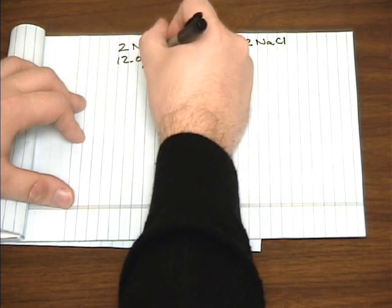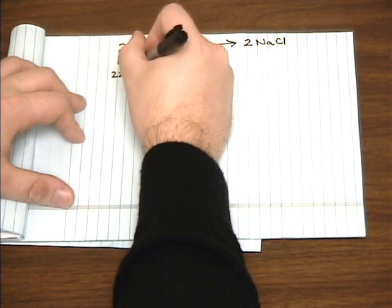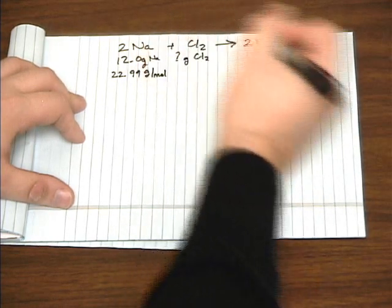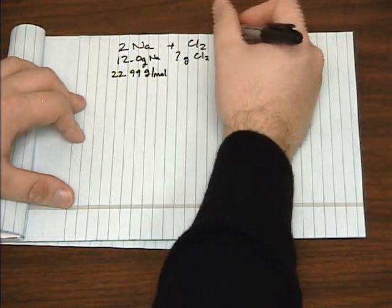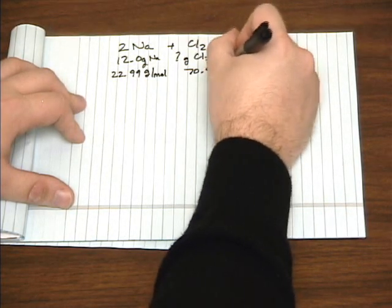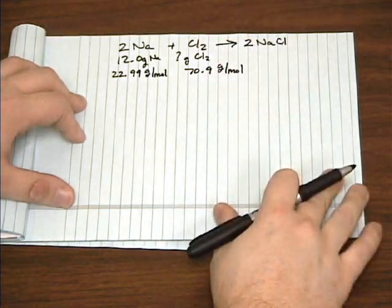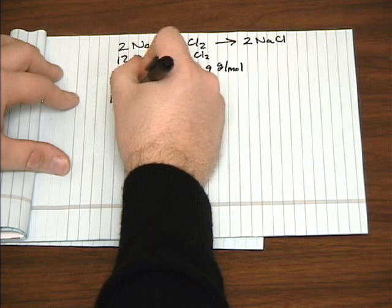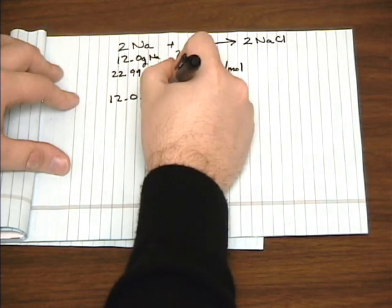If you look on the periodic table, sodium's got a molar mass of 22.99 grams per mole. And chlorine, Cl2, is 70.9 grams per mole. So just like before, we'll start with what's given, which is 12 grams of sodium.